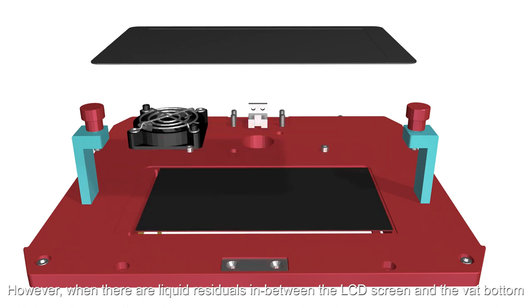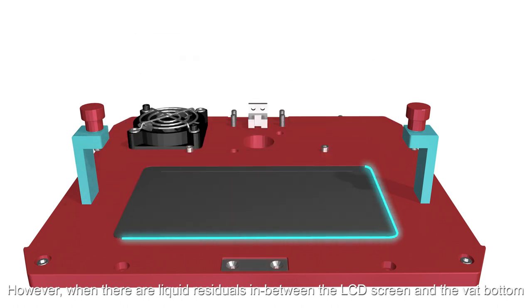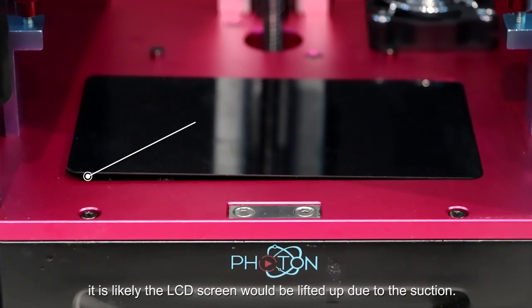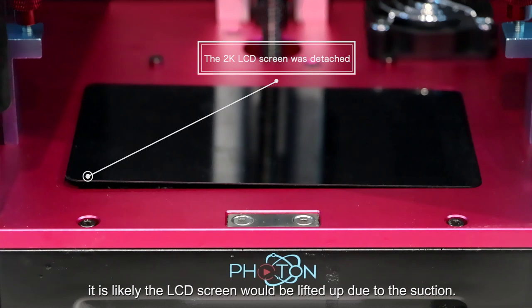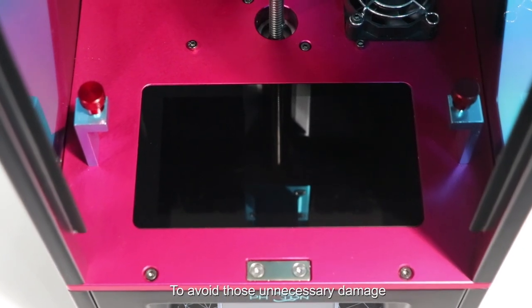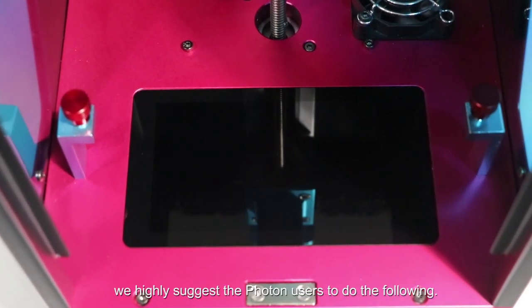However, when there are liquid residues in between the LCD screen and the vat bottom, it is likely the LCD screen would be lifted up due to suction. To avoid this unnecessary damage, we highly suggest Photon users do the following.